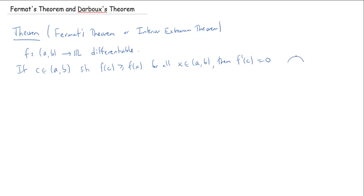Basically, if the value of the function is bigger than everything around it, then you must have a horizontal tangent at that point. This is essentially saying: if you have a local maximum of a differentiable function, then the derivative has to be zero at that maximum point. Let's do a proof of that.